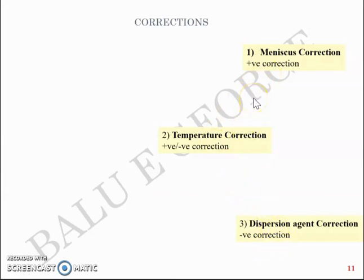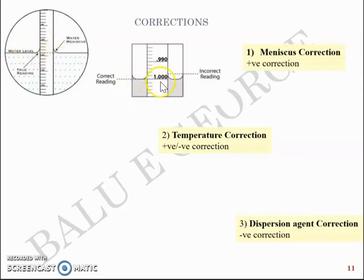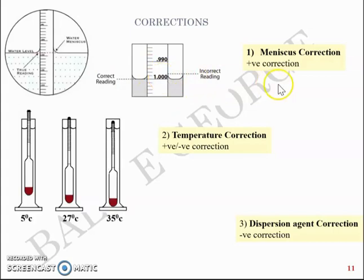Meniscus correction is a positive correction. When you have the hydrometer's stem immersed into the water it will form a meniscus, and the reading that you take is at the top level whereas the true reading will be at the bottom level because that is the water level. You have the correct reading here and what you take is the incorrect reading here, and hence it will be a positive correction.